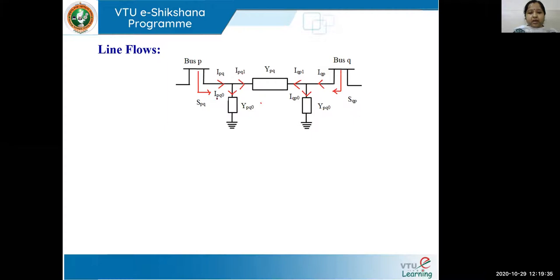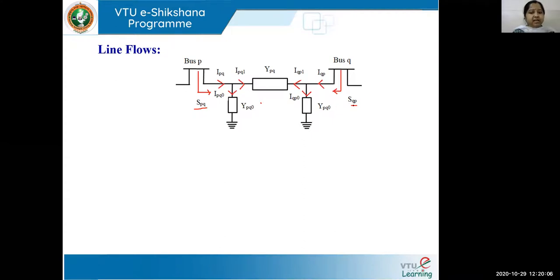The current IPQ from bus P to bus Q gets divided into two parts: IPQ1 and IPQ0. Similarly, the current from bus Q to bus P is IQP, divided into IQP1 and IQP0. The power flow from P to Q is SPQ, and from Q to P is SQP. If SPQ and SQP are equal, there are no losses; their difference gives the losses.